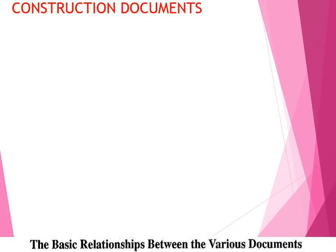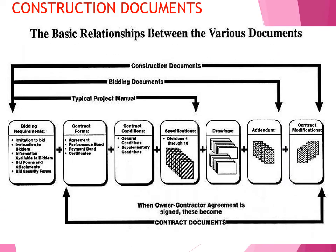Construction documents show the basic relation between various documents: construction documents, bidding documents, and typical project application. This includes bidding requirements, contract time, contract guidelines, specifications, drawings, addendum, and contract modification. When the owner and contractor have to sign all this documentation.